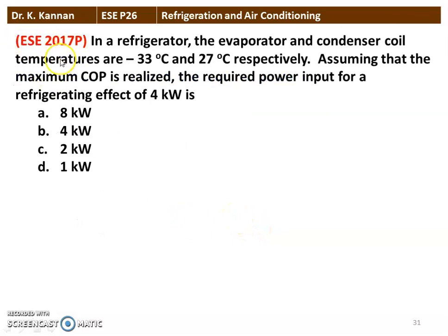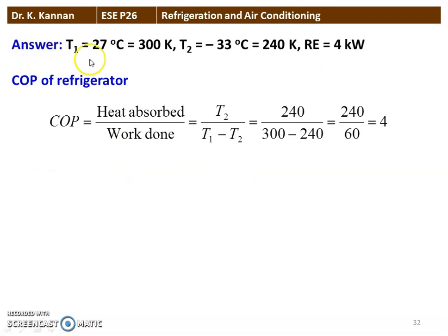The next problem is from the 2017 question paper. In a refrigerator, the evaporator and condenser coil temperatures are −33°C and 27°C respectively. Assuming maximum COP is realized, the required power input for a refrigeration effect of 4 kilowatt is 1 kilowatt. The condenser temperature T1 = 27°C = 300 K, and the evaporator temperature T2 = −33°C = 240 K.